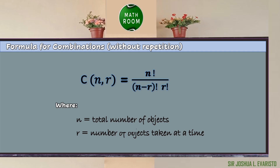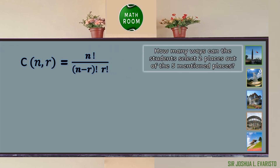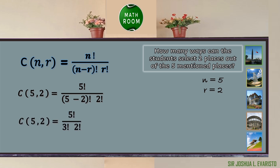Let us try to use the formula in our previous example to check if we got the correct answer. How many ways can the students select two places out of the five mentioned places? We can say that n = 5, since we have a total of five places, and r = 2, since we are selecting two places at a time. We can substitute the given values: C(5, 2) = 5! / [(5 − 2)! × 2!].